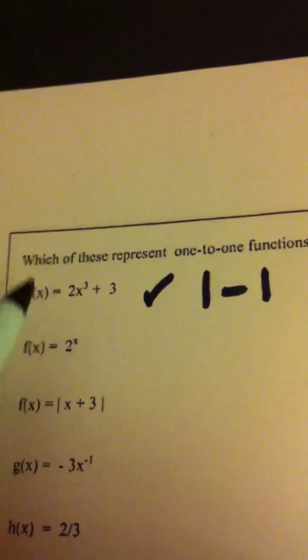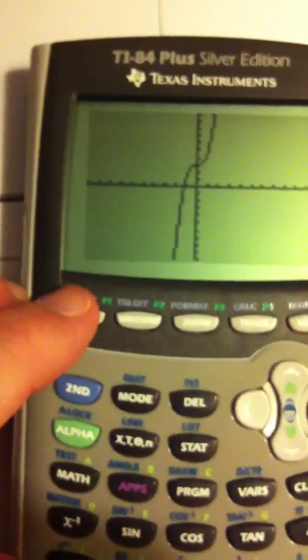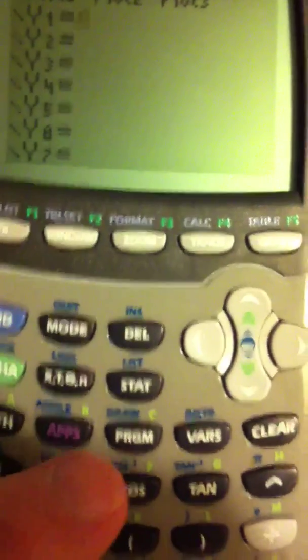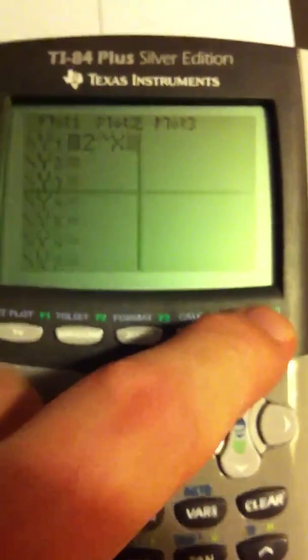Its inverse will be a function as well. Okay, the next function is 2 to the x power. Okay, let me hit y equals, clear out what I've got. And if I'm trying to graph 2 to the x power, I'm going to hit 2 caret x. And I'm going to draw a graph.